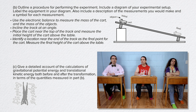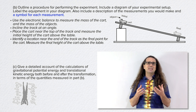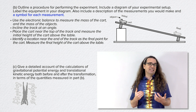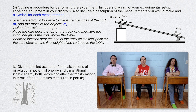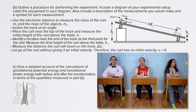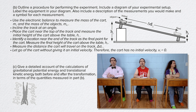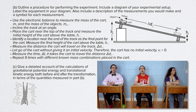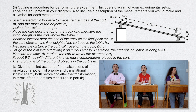Bobby reminds us to add symbols for each measurement — please read carefully and pay careful attention to what the questions ask for. They have asked for a symbol for each measurement: m sub c for mass of the cart, m sub o for mass of the objects, h sub i for height initial, h sub f for height final. The heights need to be added to the diagram as well. Measure the distance the cart will travel on the track, delta d sub parallel. Let go of the cart without giving it an initial velocity — therefore v sub i equals zero. Measure the time delta t it takes the cart to travel the distance delta d parallel. Repeat nine times with different known mass combinations placed in the cart. The total mass of the cart and objects is m sub t. That completes Part B.